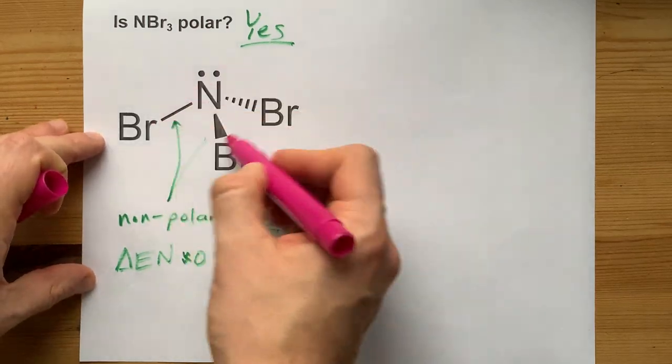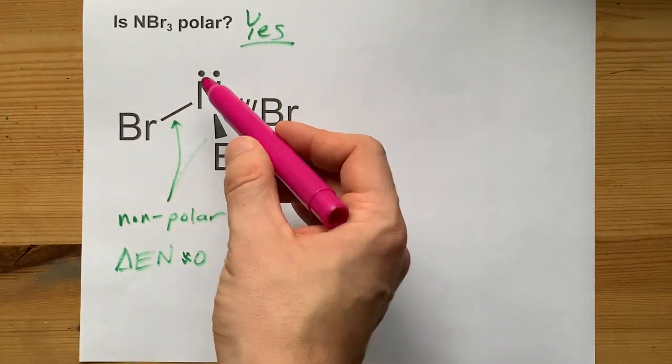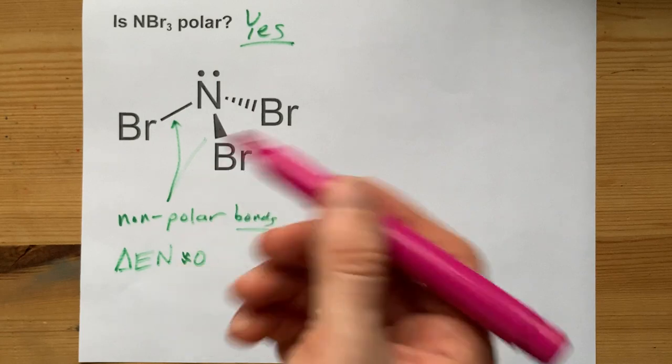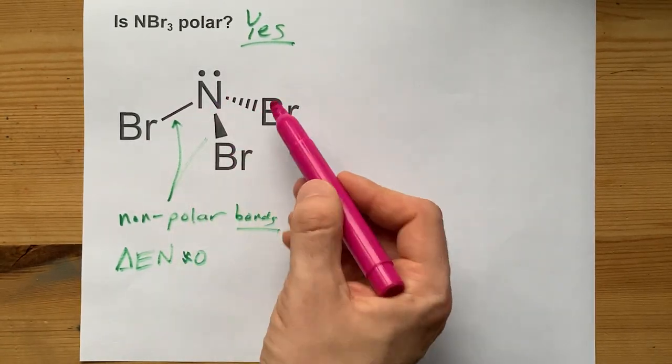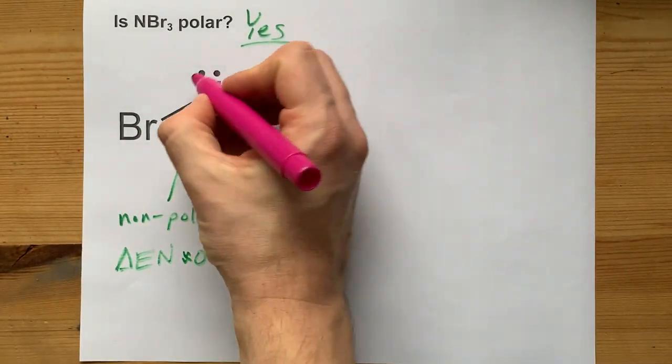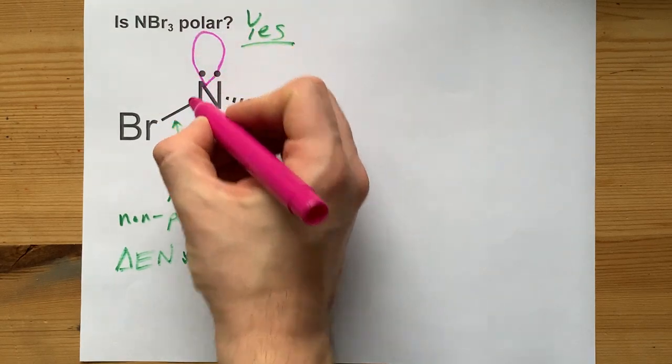If you think about the geometry around this nitrogen, it's actually tetrahedral. You have this tripod of bromines that the molecule is sitting on. Then you have this lone pair on the top side.